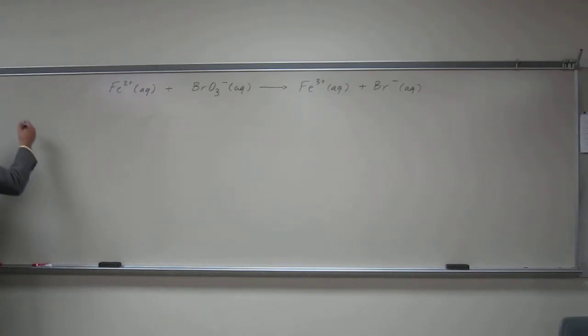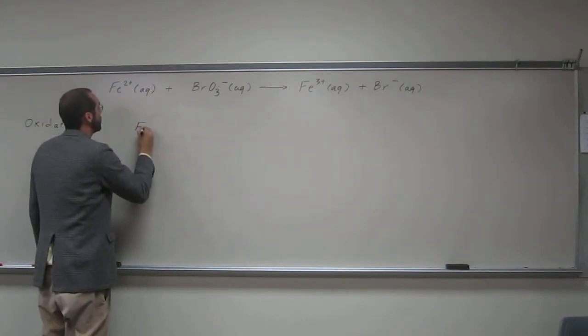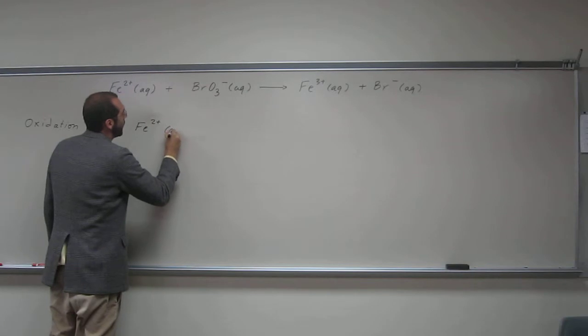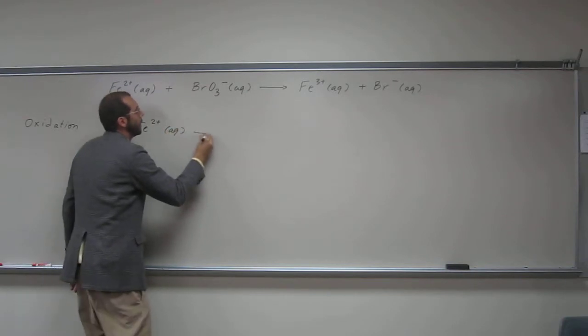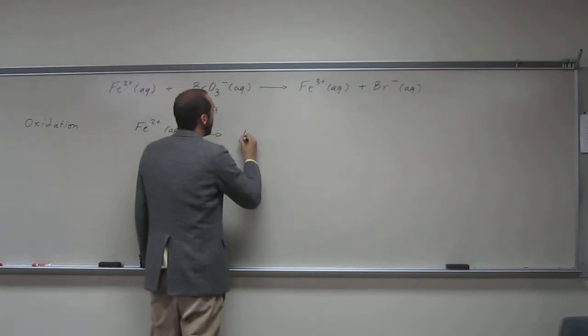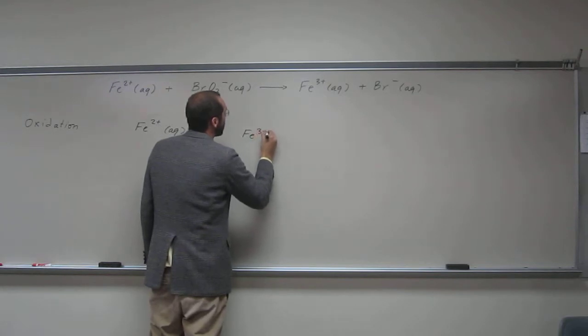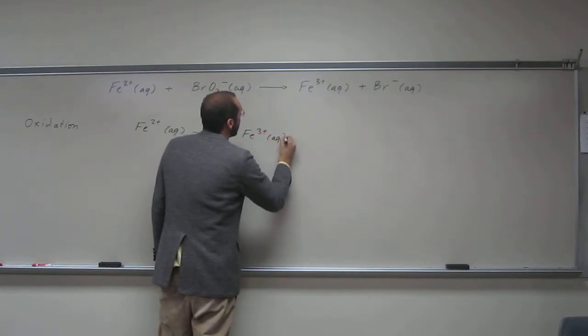So we want to remember, we want to split this thing into half reactions. The oxidation half-reaction and the reduction half-reaction, so oxidation half-reaction is going to be the Fe²⁺ aqueous goes to Fe³⁺ aqueous.